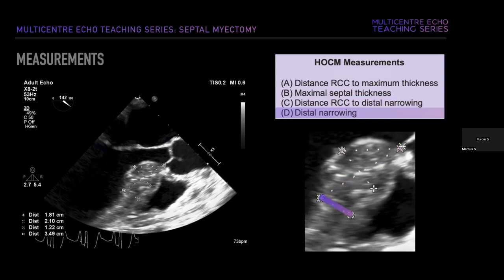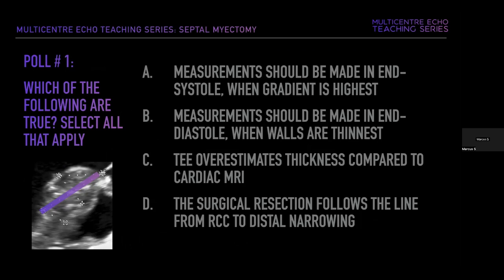Poll question: which of the following are true? A — measurements should be made in end systole when the gradient is highest. B — measurements should be made in end diastole when the walls are thinnest. C — TEE overestimates thickness compared to cardiac MRI. Or D — the surgical resection follows the line from the RCC to the distal narrowing.